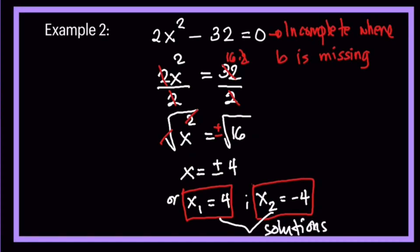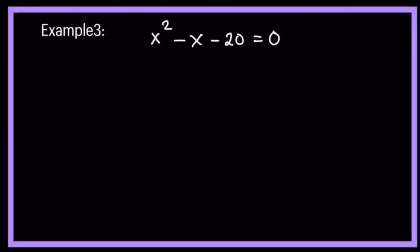There is more. Let's have another example. Example number 3. This is another type of quadratic equation. You have here x squared minus x minus 20 is equal to 0. This is a complete quadratic equation. Here we have to check c, the constant.